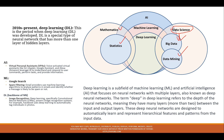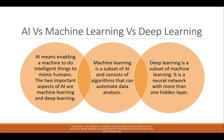Deep learning is used for image recognition — identifying faces and objects in images. Deep learning is a subset of machine learning, and machine learning is a subset of artificial intelligence. AI means enabling machines to do intelligent things and mimic humans. Machine learning consists of algorithms that can automate analysis of data — input goes in, output comes out.